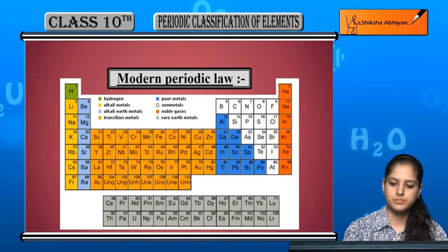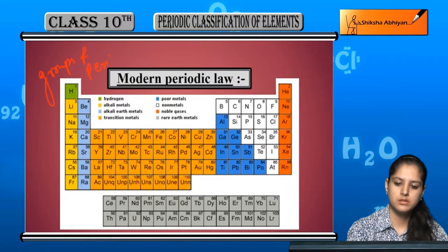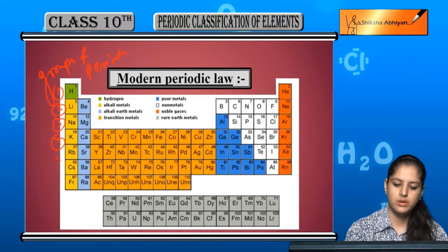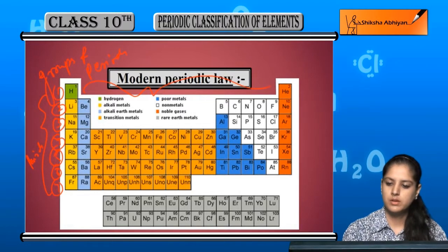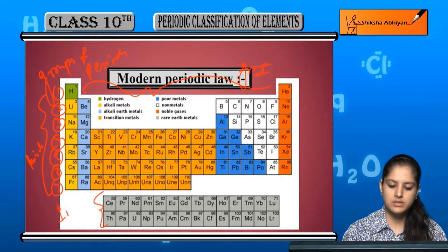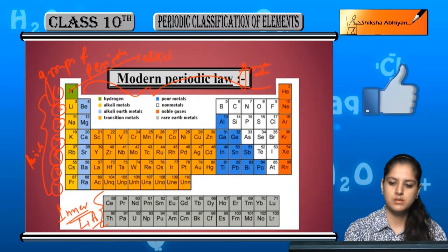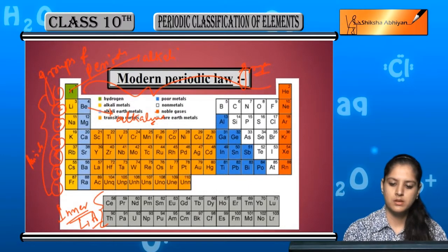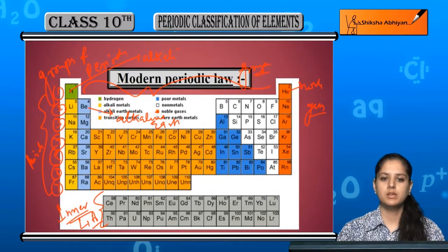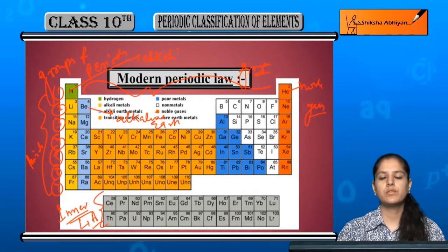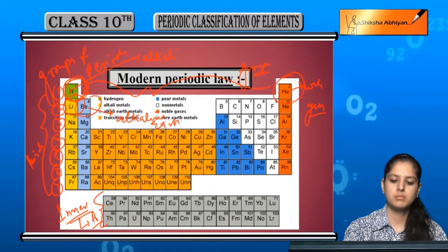In the modern periodic table, we have groups and periods — 1, 2, 3, 4, 5, 6, 7 periods. These are the inner transition elements: lanthanides and actinides. These are the alkali metals, these are the alkaline earth metals, and these are the noble gases. This is the layout of the modern periodic table, where elements are placed in increasing order of atomic numbers. You can see hydrogen has atomic number 1, helium is 2, lithium is 3, beryllium is 4.